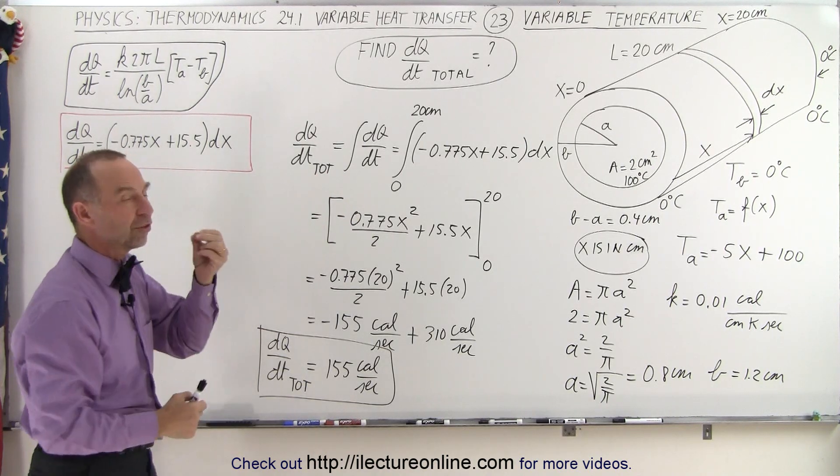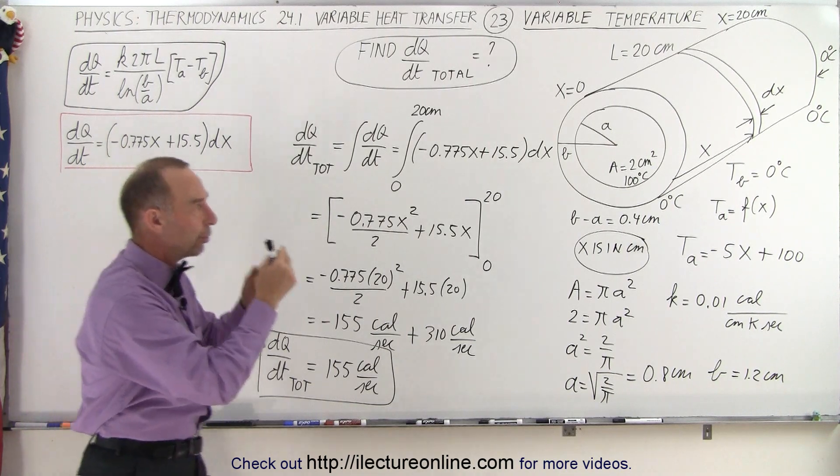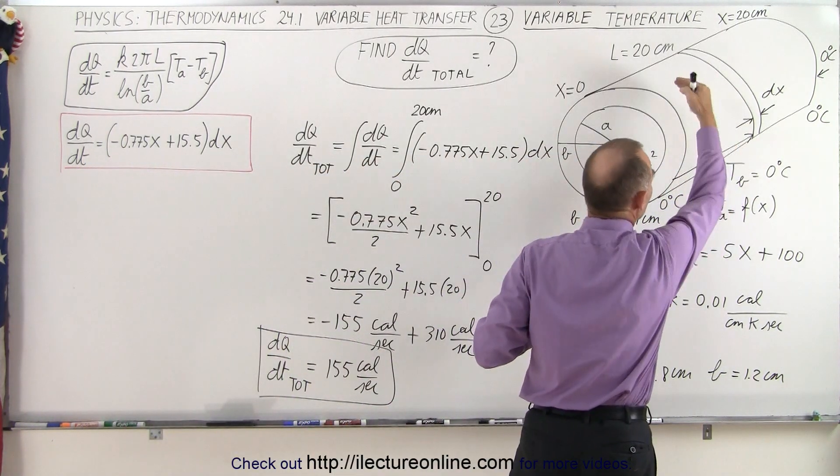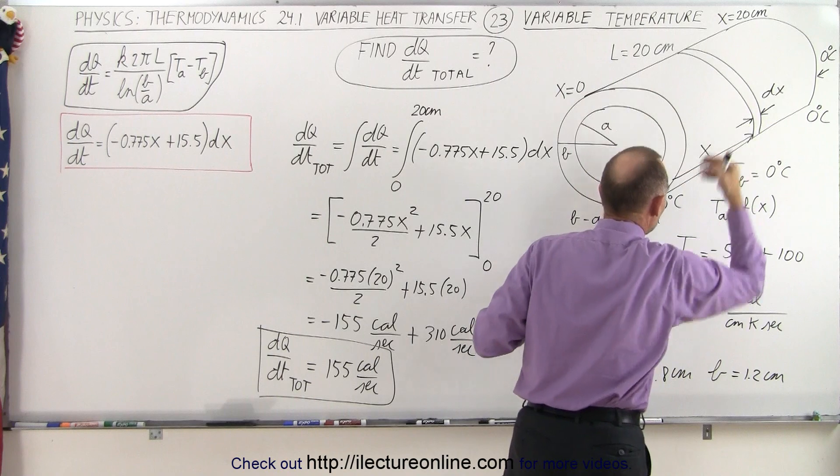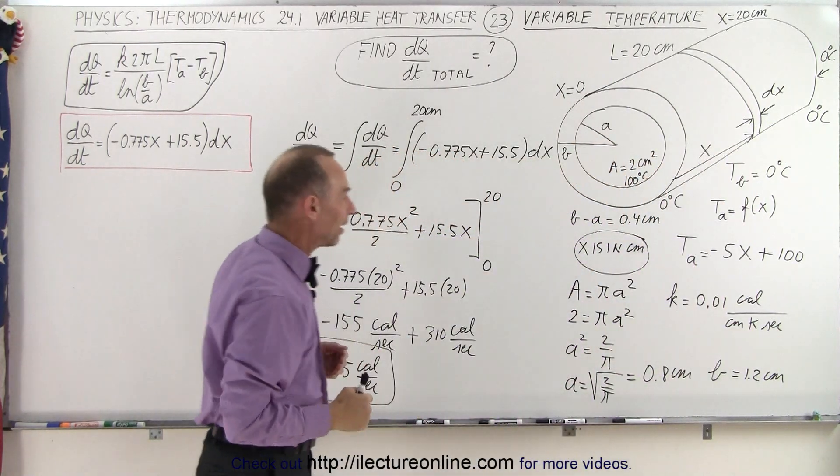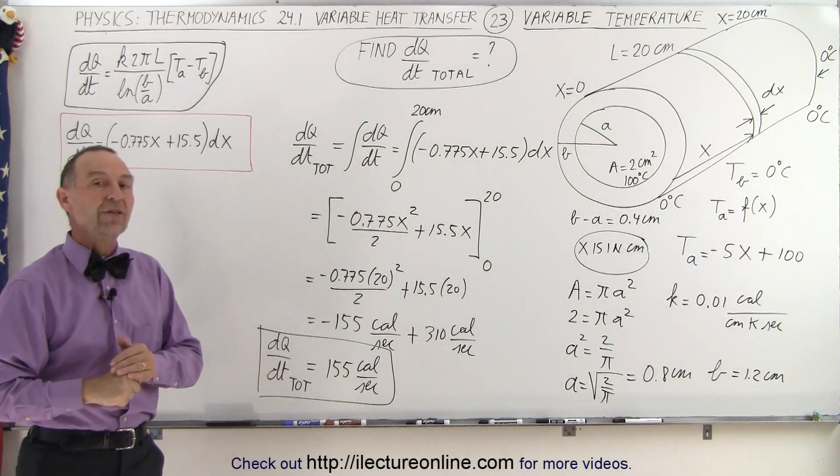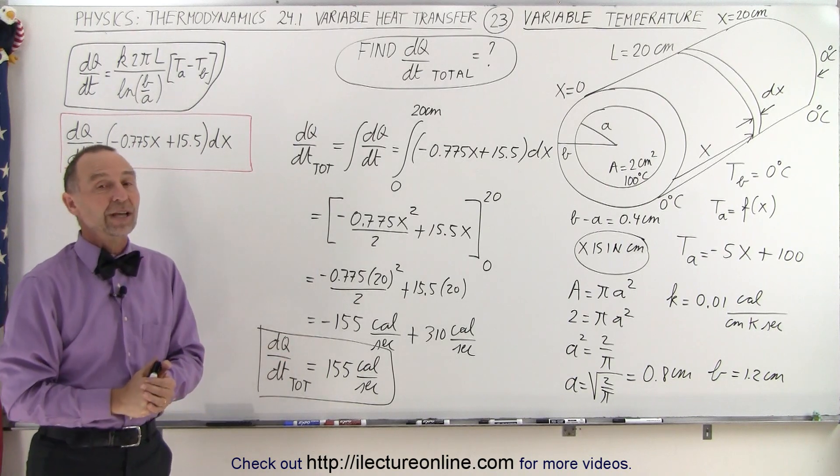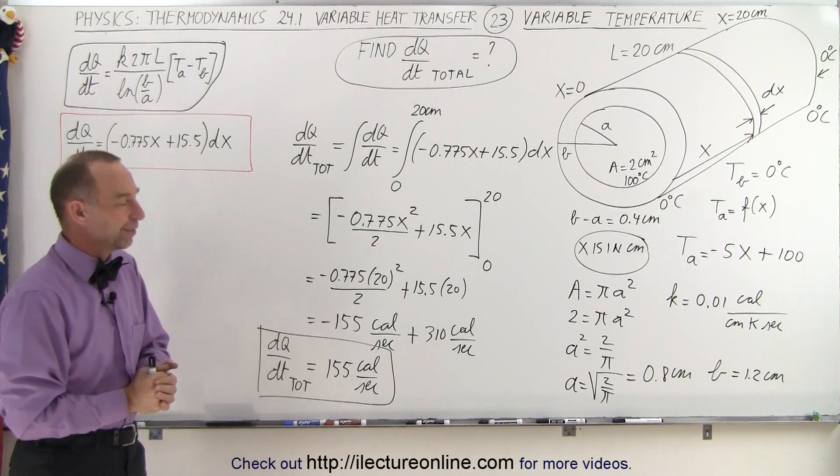This is the equation that gives us the heat transfer per dx, per particular position as a function of position. We integrate over the entire length, and we get the total heat transfer per second, in this case, in terms of calories per second, and that's how it's done.